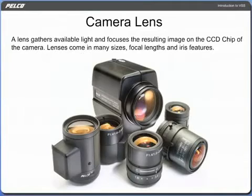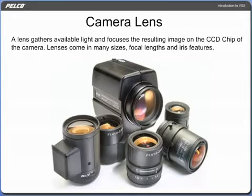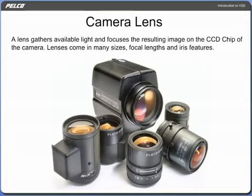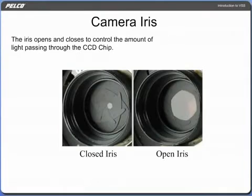A lens gathers available light and focuses the resulting image on the chip of the camera. Lenses come in many sizes, focal lengths, and iris features. Choose the wrong lens, and you wind up with a poor or unusable picture. Adjusting the lens is also important for maximum performance. The iris opens and closes to control the amount of light passing through the CCD chip.